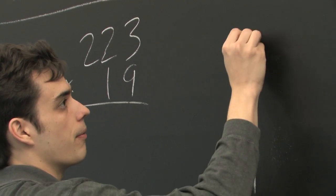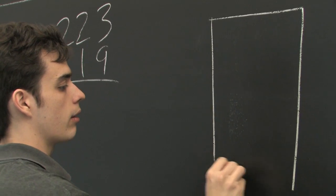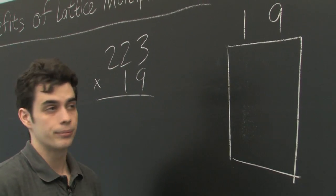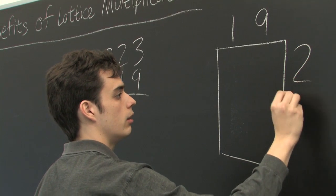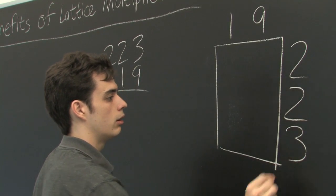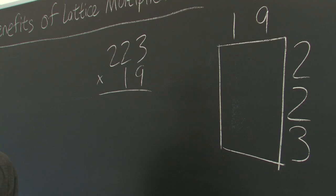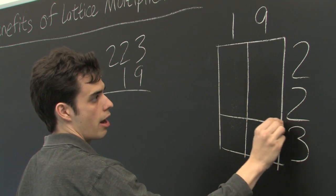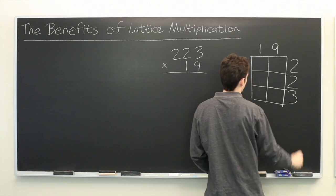Lattice multiplication looks a little different. We write one number along the top of a rectangle and the other number along the side. Then we divide up our rectangle into boxes.